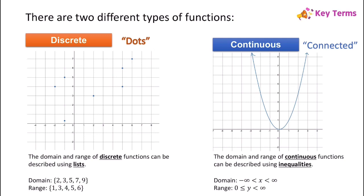A continuous function is all connected. One definition of a continuous function is that you can draw it without ever having to lift up your pen. So that's a continuous function — it's all connected, and it includes a whole set of values. That's why we have to describe the domain and range using inequalities, and that's what we're going to be reviewing today: describing the domain and range of continuous functions.